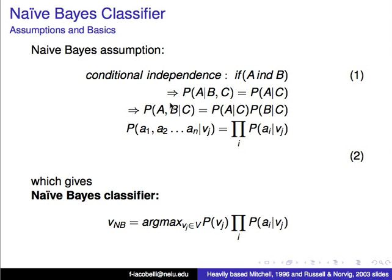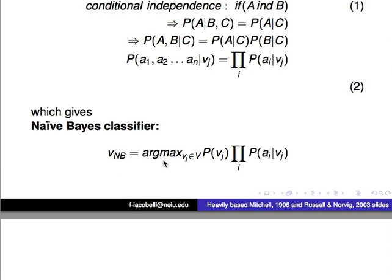This is interesting because it resembles symptoms and a value. We can generalize that the probability of all the attributes given a value is actually the product of the probability of each attribute given that value — just like the probability of attribute A and B given value C equals the probability of A given C times the probability of B given C. When we generalize this, we get the Naive Bayes classifier: the argmax over all possible values of the probability of v_j times the product of the probability of each attribute given v_j.